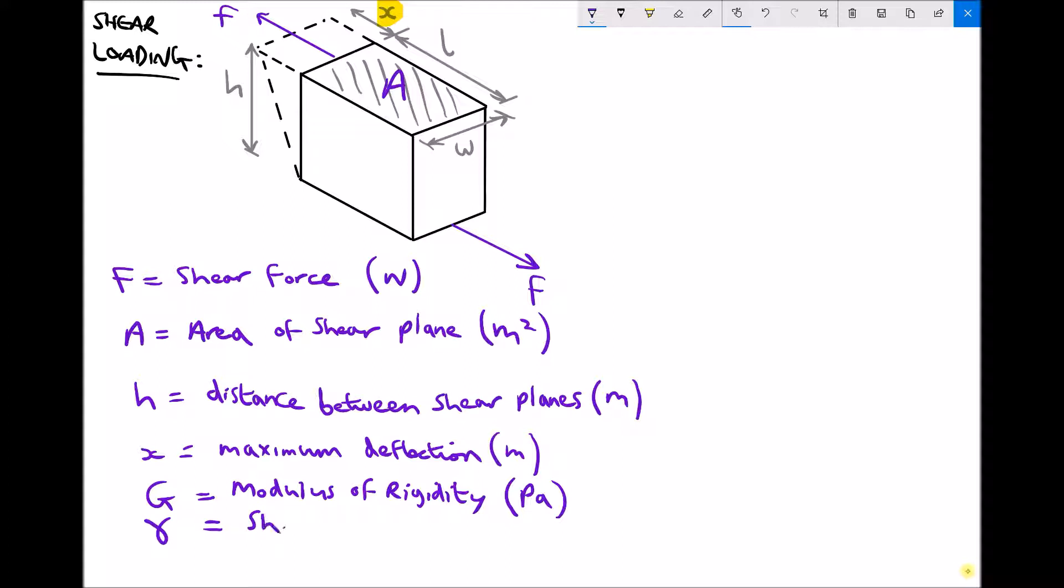Next we have a variable called gamma, and gamma is shear strain. Shear strain is dimensionless. Its direct comparison would be the strain that we saw in the previous tutorial, which was represented by the Greek letter epsilon. Epsilon we use when we have direct loading; gamma we use when we have shear loading. Finally, we have a variable tau, and tau is the shear stress. Shear stress is measured in Pascals.